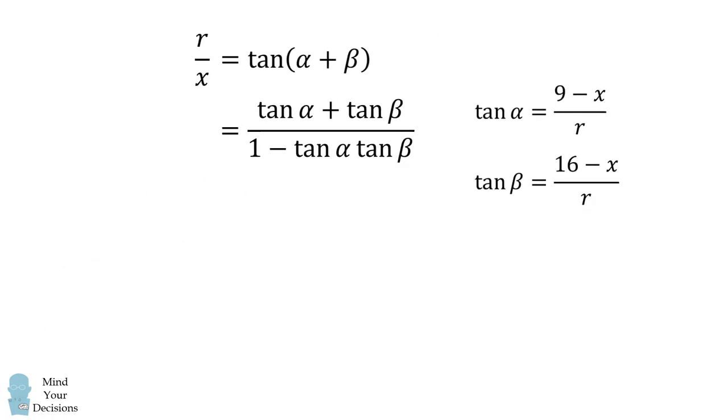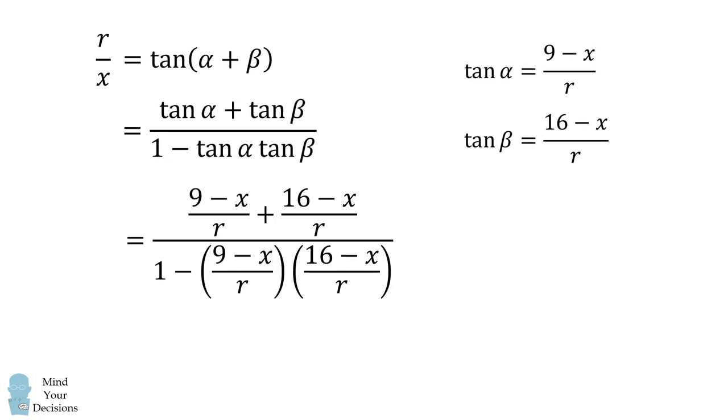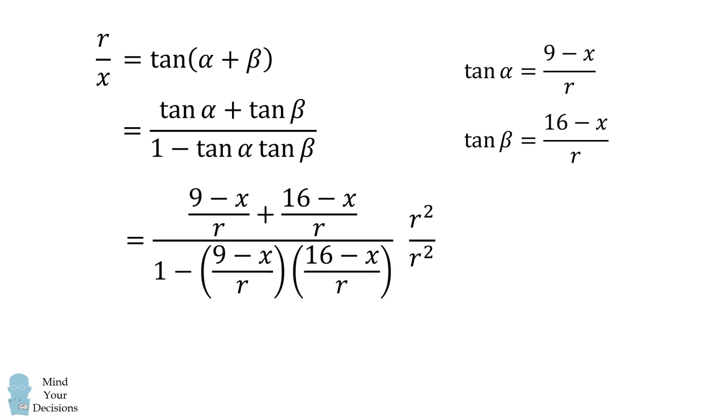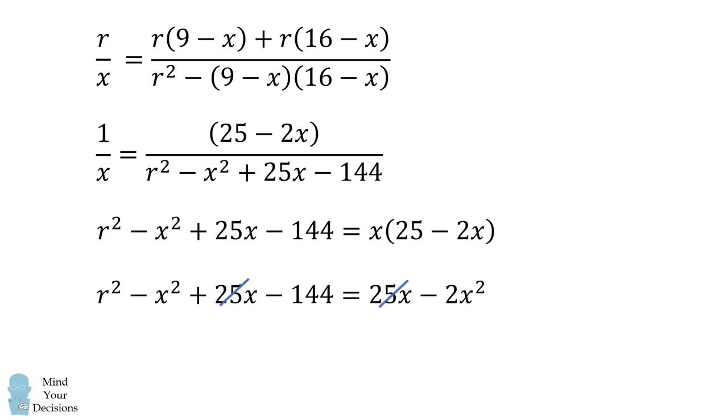We'll substitute in for tangent of alpha and tangent of beta. We then simplify this fraction. We'll multiply the numerator and denominator by r squared, and then we'll continue to simplify. We simplify the numerator. Then we can cancel out the r terms on both sides of this equation. From here, we will cross multiply. Then we will continue to simplify. The 25x terms cancel out, and we group the x squared terms. So we get r squared plus x squared is equal to 144, which is equal to 12 squared.